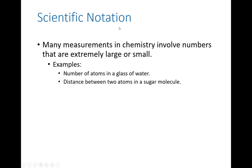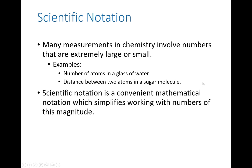Our first important mathematical topic is scientific notation, which should be a review from earlier classes. Many of the measurements in this class are extremely large, like the number of atoms in a drop of water, or extremely small, like distances between atoms. We use scientific notation to simplify working with numbers of those magnitudes — essentially to avoid having to write too many zeros.